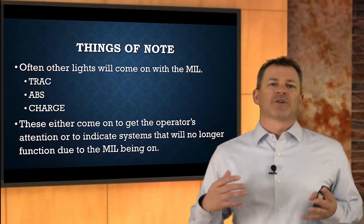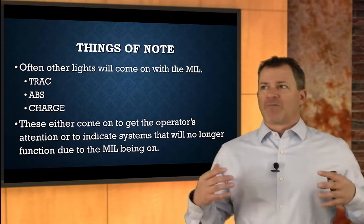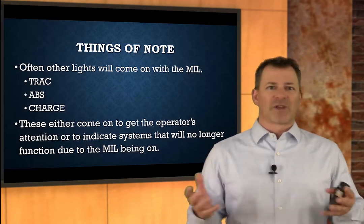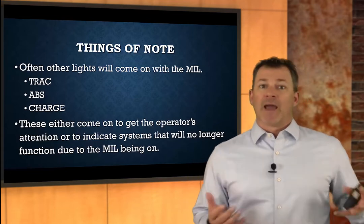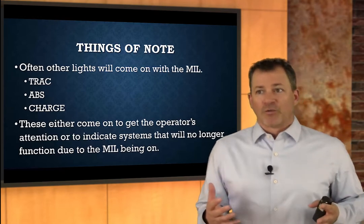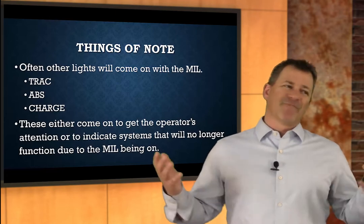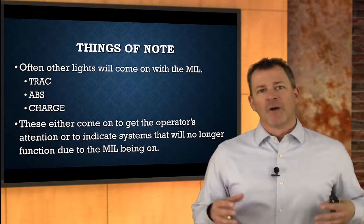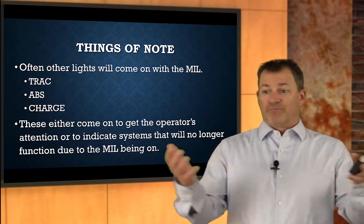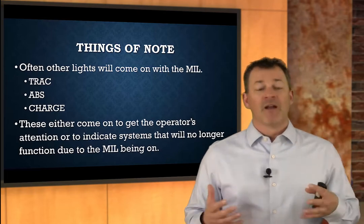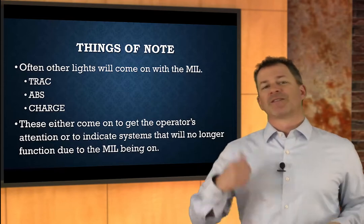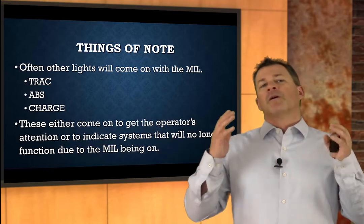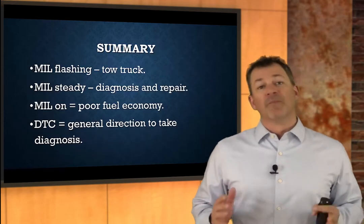Often I get this phone call: when the check engine light comes on, the customer says their traction light, ABS light, charge light, 4x4 light, and all these other lights are on too. Manufacturers will often turn those other lights on to get the operator's attention and say something seriously is wrong with your car. Those other lights come on for one of two reasons: either to get their attention, or to indicate that a system — like traction control or the anti-lock brake system — is not going to operate properly as long as that check engine light is on. Bottom line: if all these lights come on, it's just to get their attention.